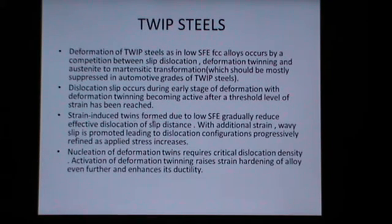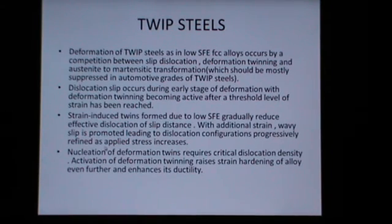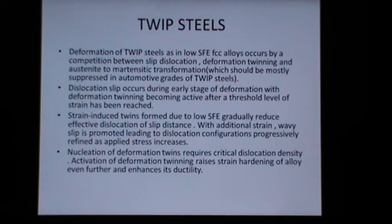Strain-induced twins formed due to low stacking fault energy gradually reduce the effective dislocation slip distance. With additional strain, wavy slip is promoted, which leads to dislocation configurations progressively refined as applied stress increases. Nucleation of deformation twins requires a critical dislocation density. Activation of deformation twinning raises strain hardening of the alloy even further, thereby enhancing its ductility.